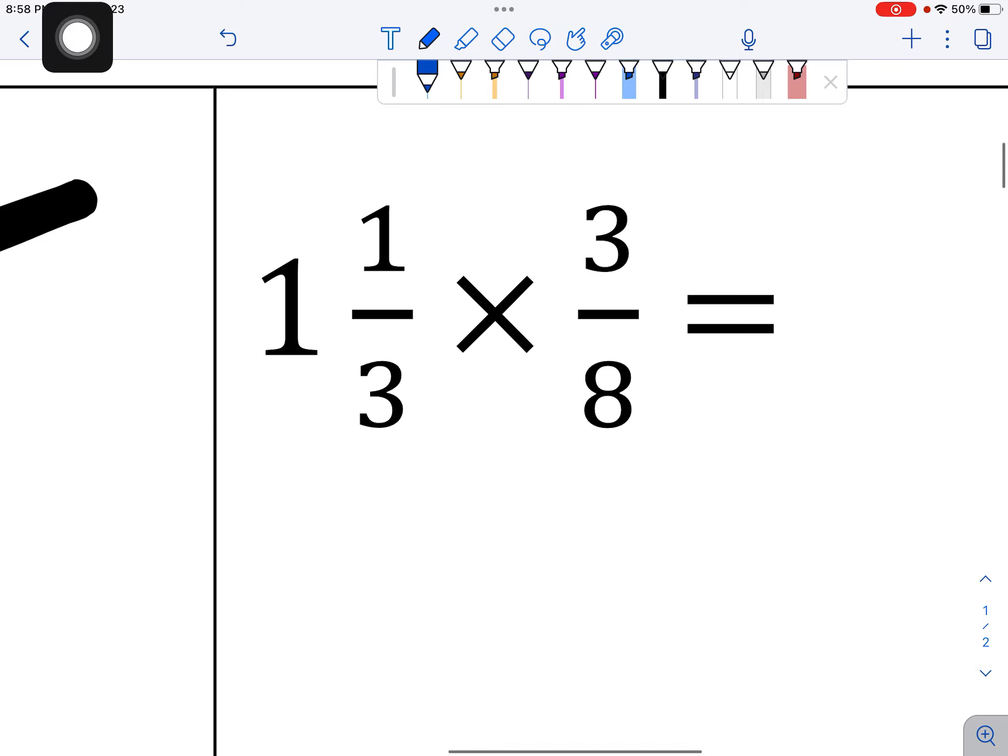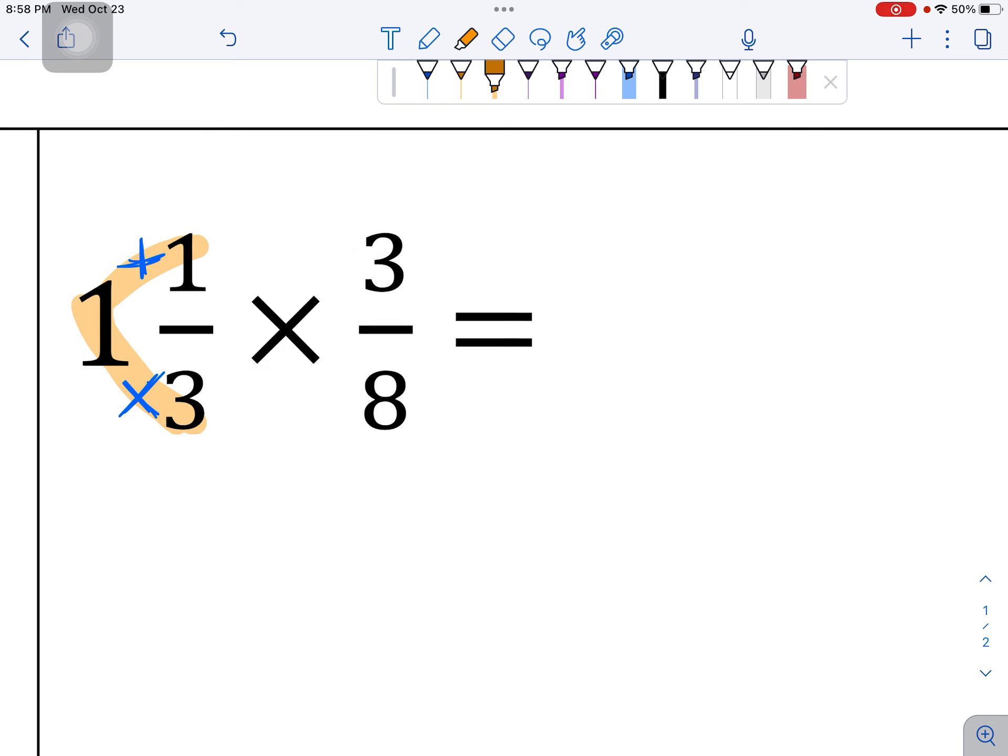To do that, we are putting in a times between the denominator and the numerator, and then a plus, and then we just work our way right around. So first I see 3 times 1, 3 times 1 is 3, and then keep going and we get 4. So 1 and 1 third is really 4 thirds.